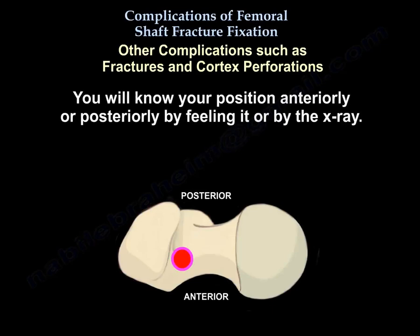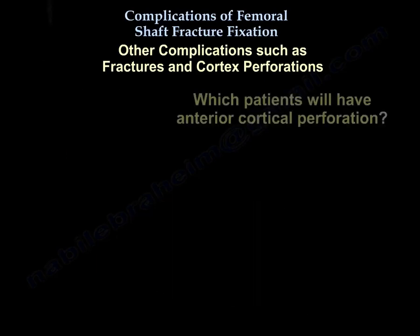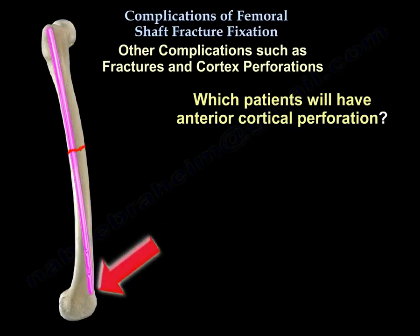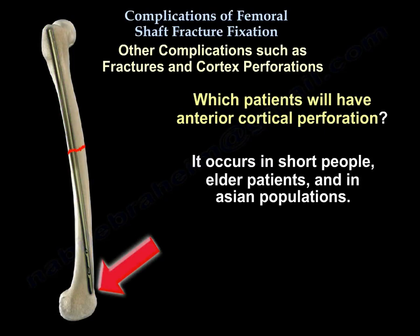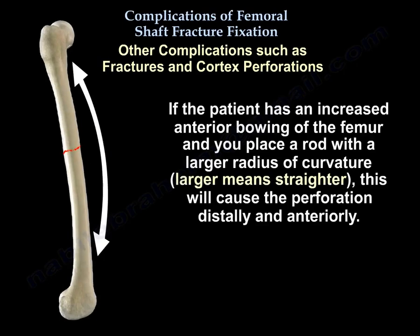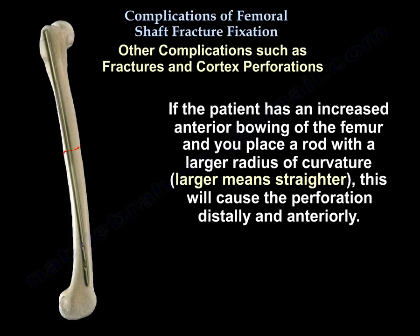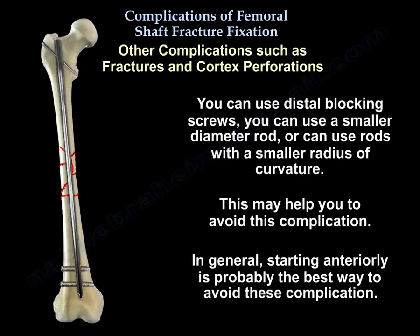You will know your position — anterior or posterior — by feel or by x-ray. Anterior cortical perforation occurs in short people, elderly patients, and Asian populations. If a patient has increased anterior bowing of the femur and you insert a rod with a larger radius of curvature — meaning a straighter rod — that will cause perforation distally and anteriorly. You can use distal blocking screws, a smaller diameter rod, or rods with a smaller radius of curvature to avoid this complication.